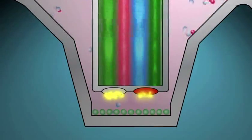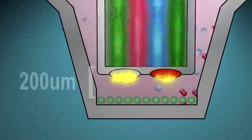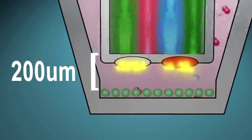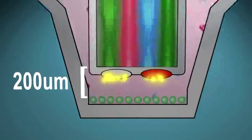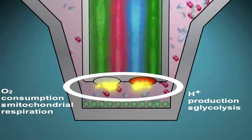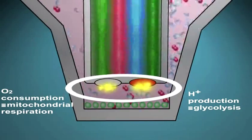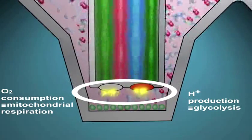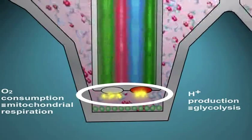The actual measurement is accomplished by the instrument sensor cartridge being lowered to 200 microns above the cells, creating our patented transient microchamber. This microchamber allows us to detect changes in oxygen and protons almost immediately, as opposed to hours.